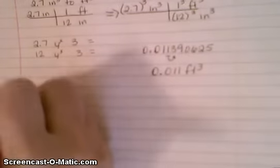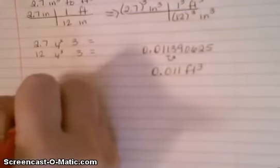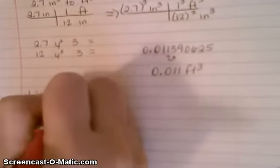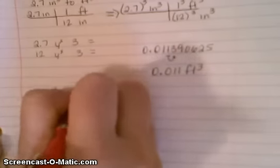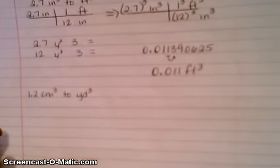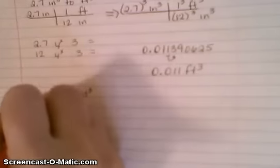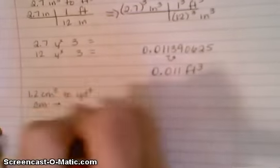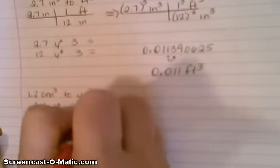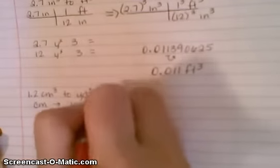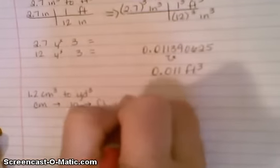Now what if I have something like 1.2 centimeters cubed, and I want to go to yards cubed? Well, we know to go between systems, you're going to have to use that inches to centimeters. So if we didn't have a cube, we'd want to go from centimeters to inches, and then we have to go from inches to feet to yards.